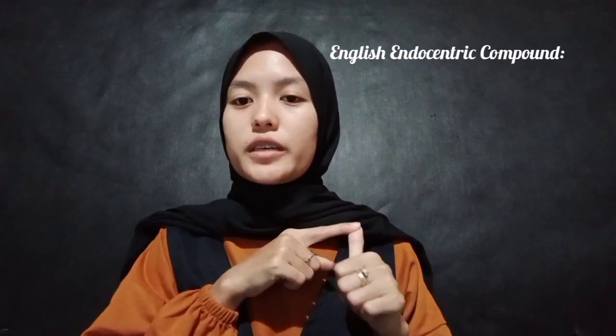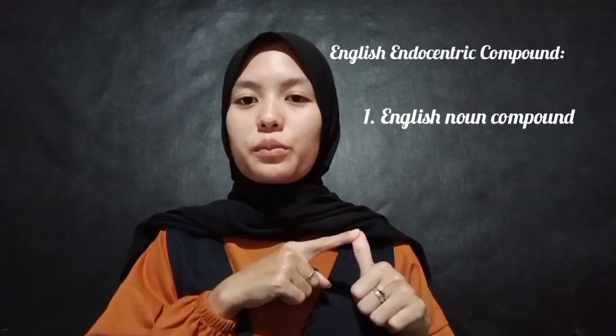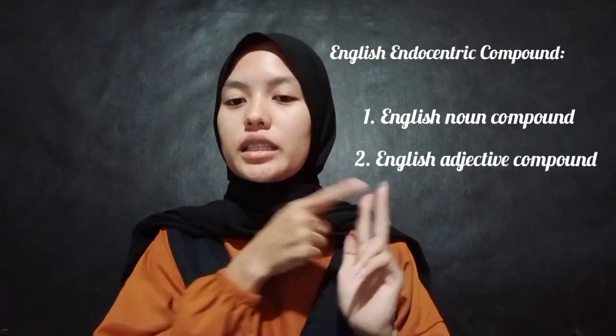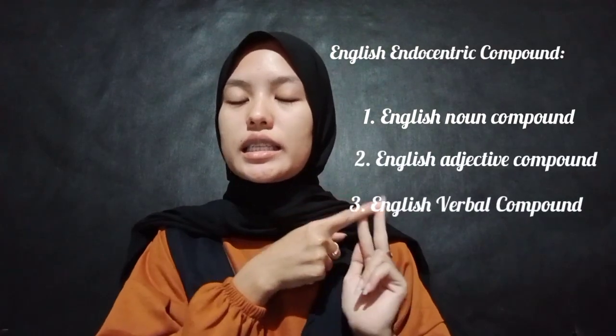English Indocentric Compound consists of: first, English Noun Compound; second, English Adjective Compound; and third, English Verbal Compound. But in this opportunity, I will just explain you about the second and the third, that is English Adjective Compound and English Verbal Compound.